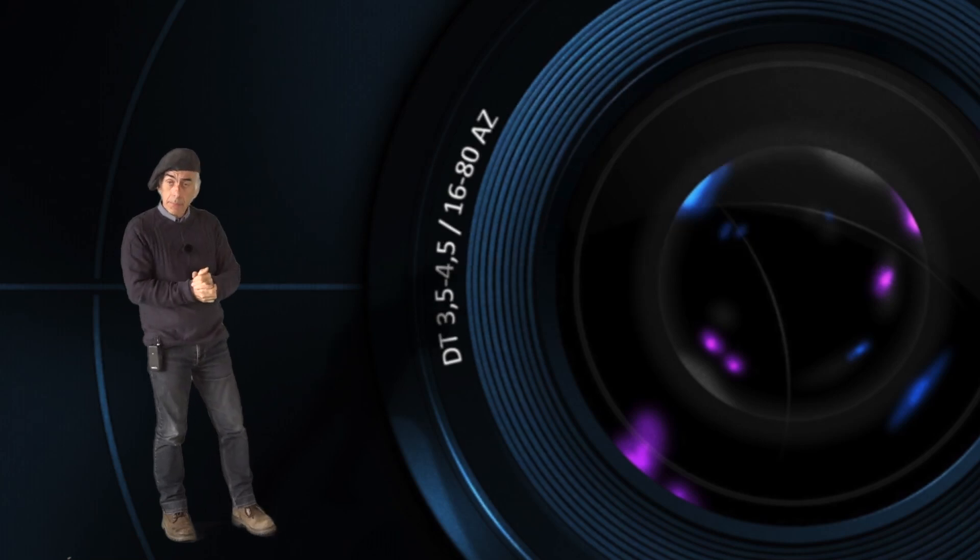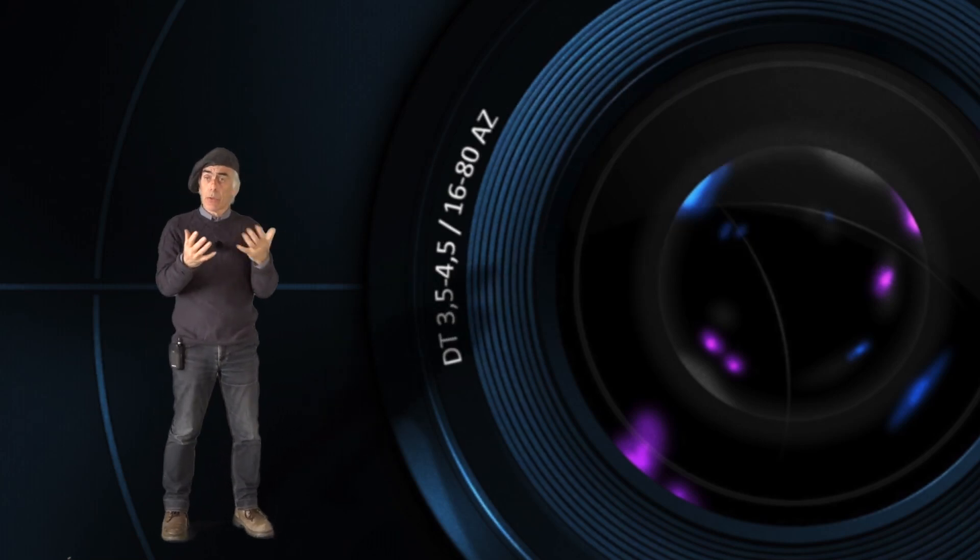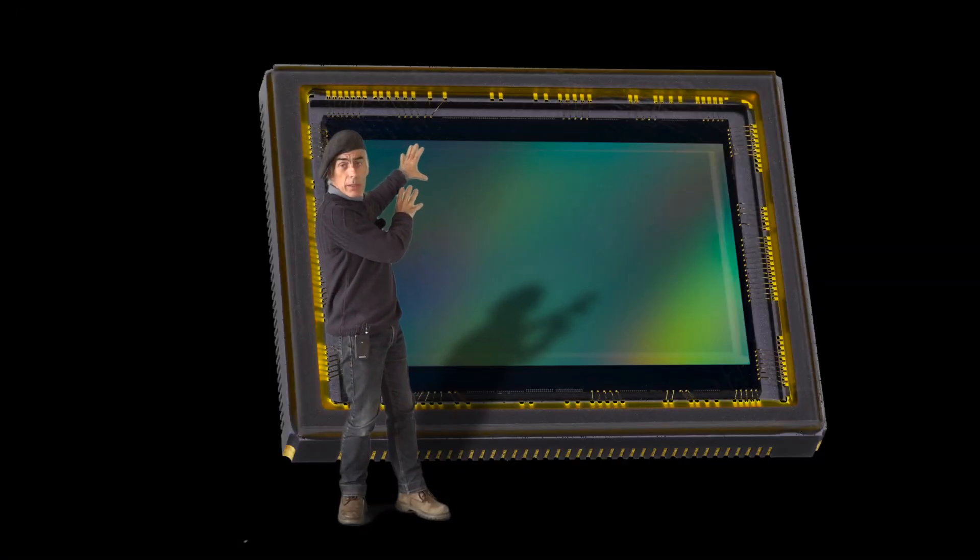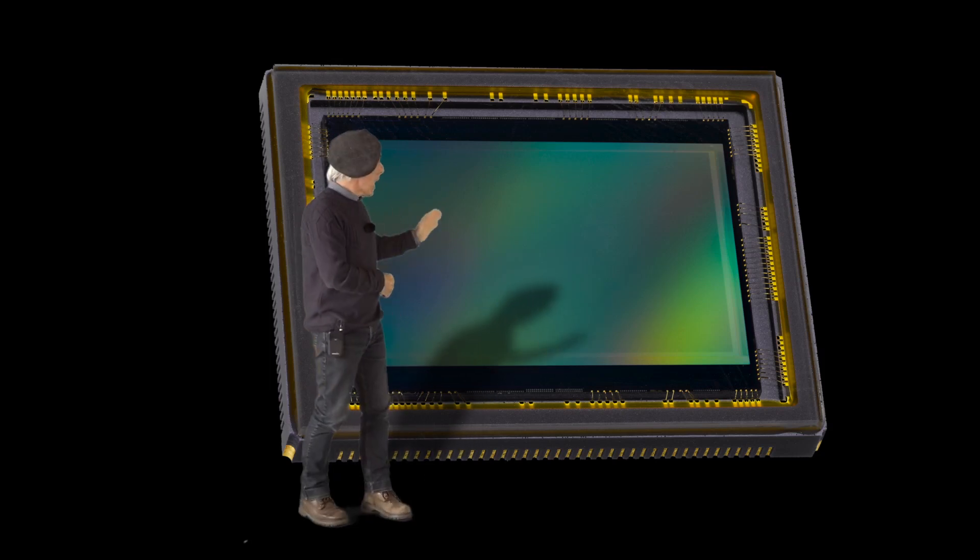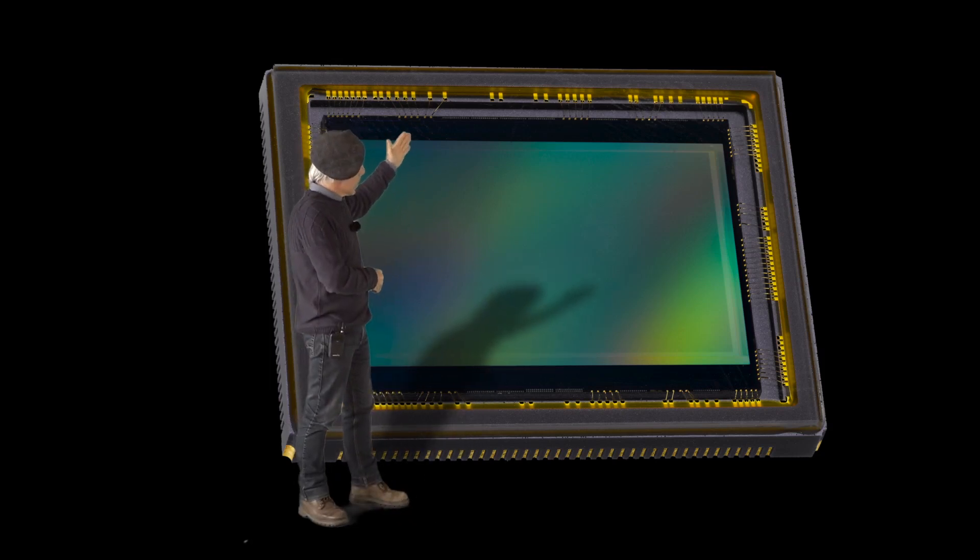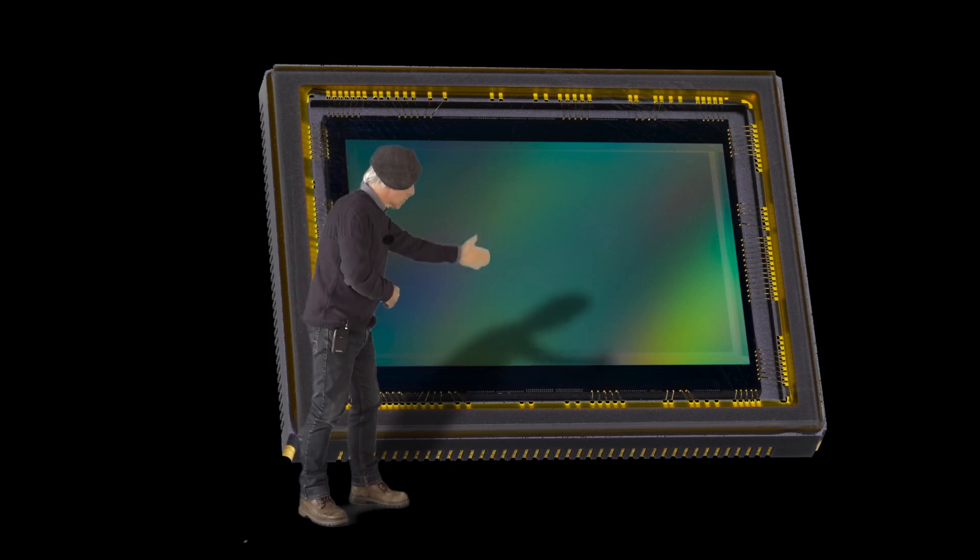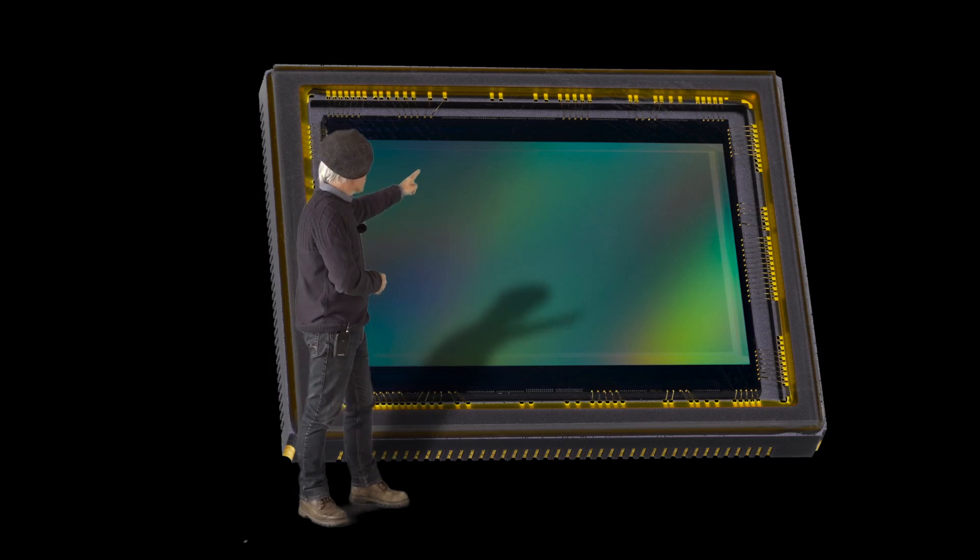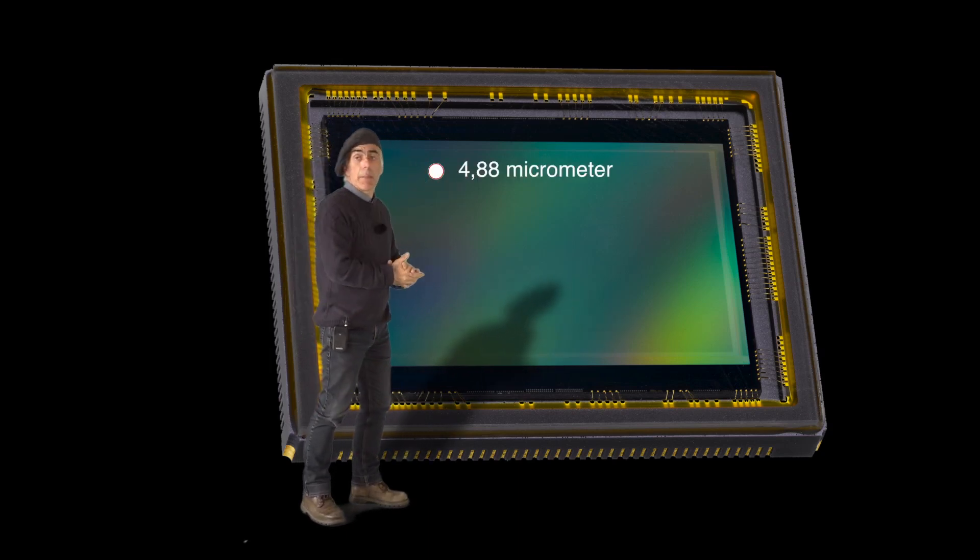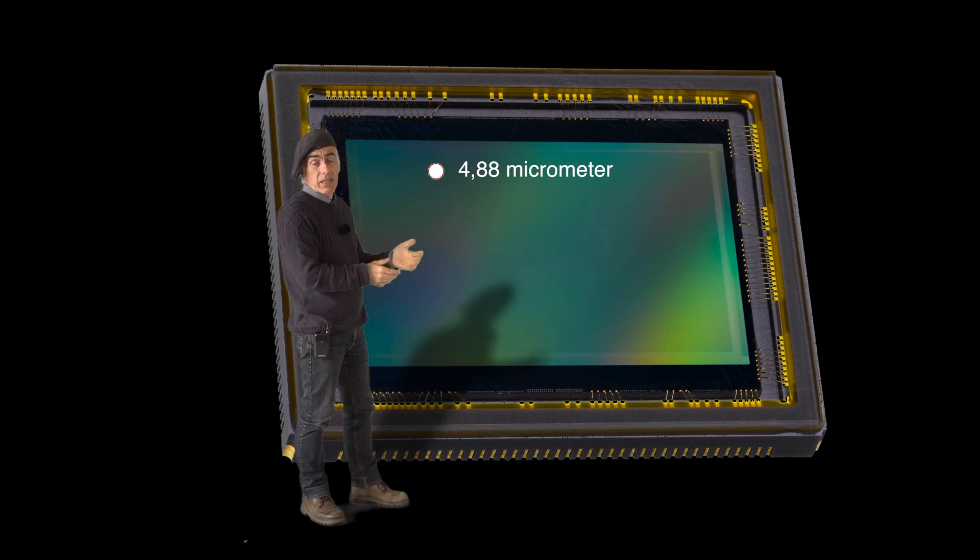So now let's get back to our chip, our CCD or our CMOS sensor. What we have here is a Nikon D800 sensor, but it could be anyone. I'm just saying this is one of them. Every pixel on there is about 5 micrometer. In essence, it's really 4.88, but let's say for the sake of the explanation that it is 5 micrometer.